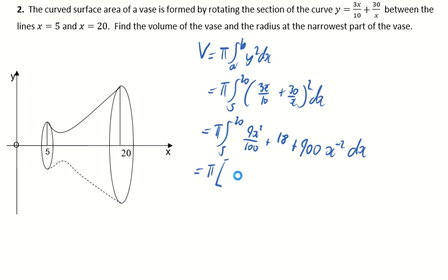and then square brackets, because we've integrated, you're going to have 3x cubed over 100 plus 18x, and then that's going to be minus 900 x to the minus 1, and that's between 20 and 5.